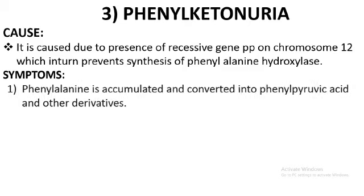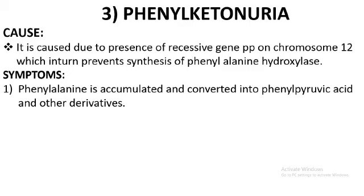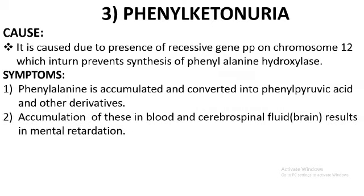The first symptom is the absence of the enzyme phenylalanine hydroxylase, causing phenylalanine to accumulate in the blood. It is then converted into phenyl pyruvic acid and other derivatives. The concentration of these derivatives increases in blood and cerebrospinal fluid, and as a result there is mental retardation in the child.